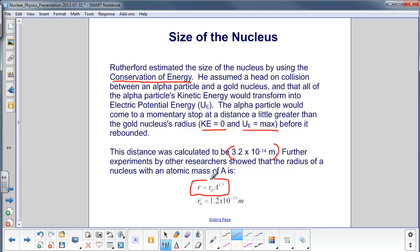The radius of a nucleus with an atomic mass of A is R0 times A raised to the 1/3rd power, where R0 is 1.2 times 10 to the minus 15th meters.